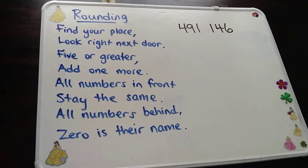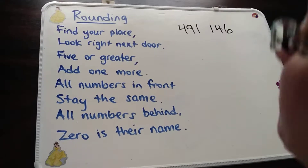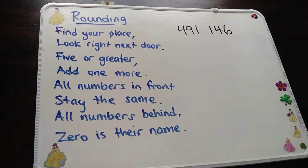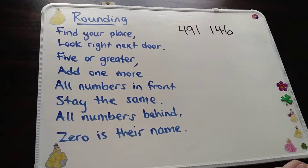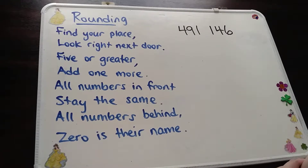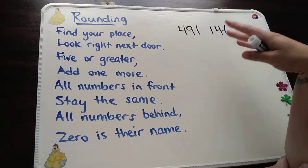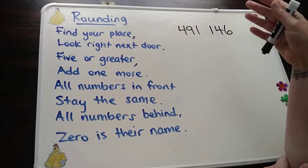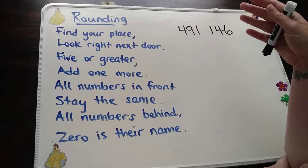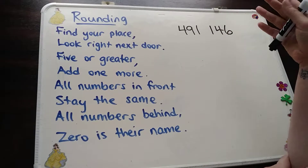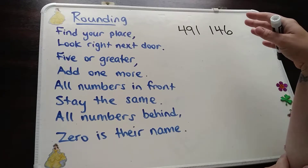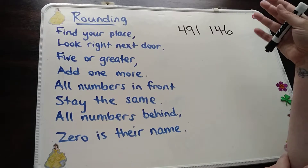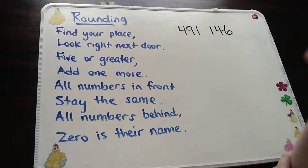Hi everybody. Today we're going to be talking about rounding. The example I have for you is 491,146. I've chosen a larger number just to see different examples to go with it. However, if you're in grade 2 or 3 and still doing rounding with smaller numbers, it still works. And the strategy I'd like to share with you today is the rounding poem.